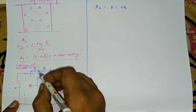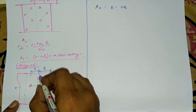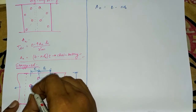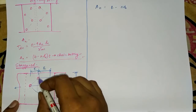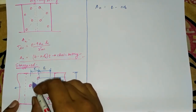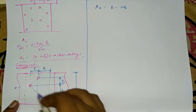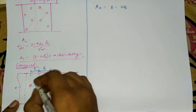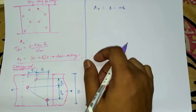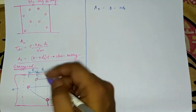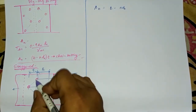If we study the failure pattern, the plate will fail along an inclined path. As you can see, we get some additional inclined length. If the bolts were arranged in a chain manner, the failure would be a straight line, but since the path is inclined, we get some additional distance.